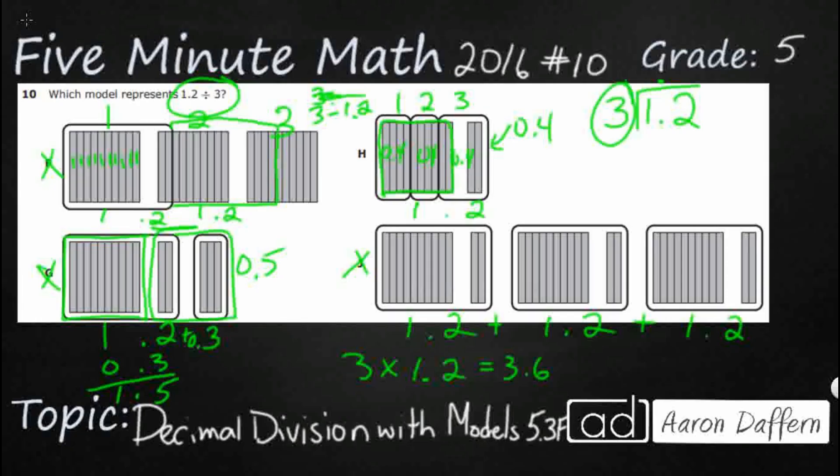So put the decimal up there. Pretend this is 12. 3 goes into 12 how many times? 4 times. And there we go. So our answer is going to be H.